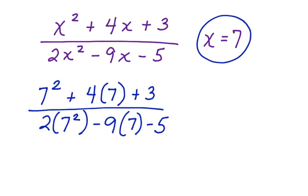Here we have 7 squared plus 4 times 7 plus 3 in the numerator. And we have 2 times 7 squared minus 9 times 7 minus 5 in the denominator.